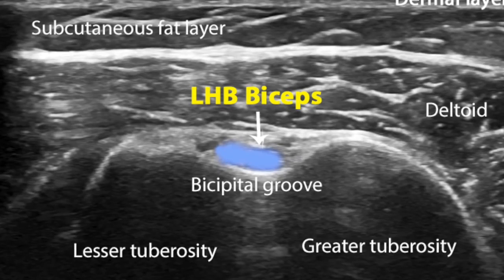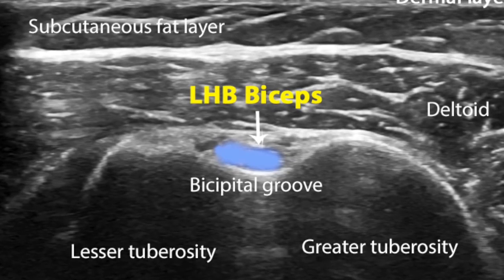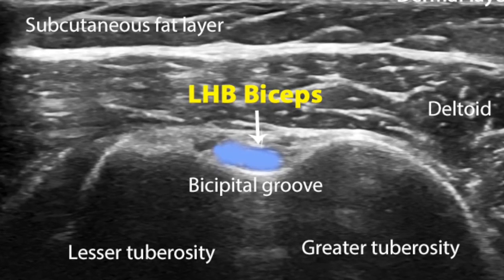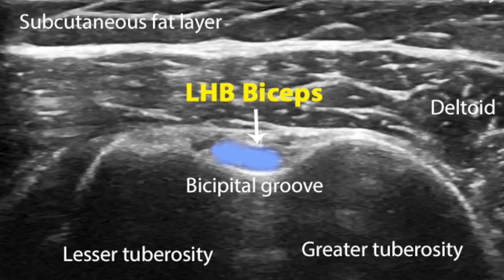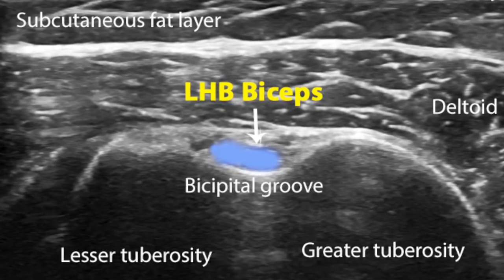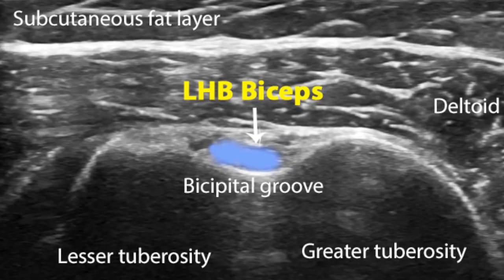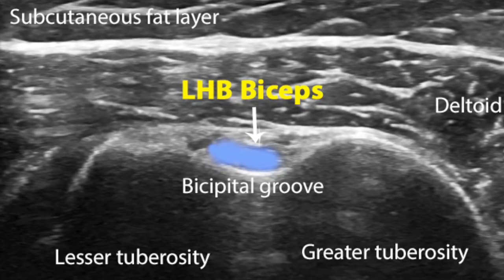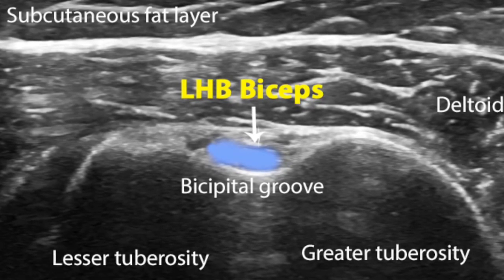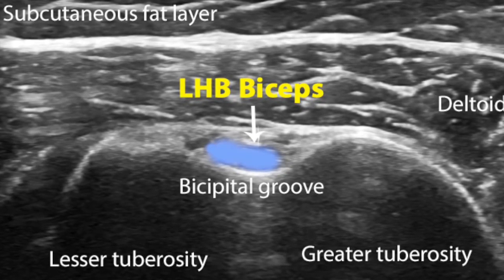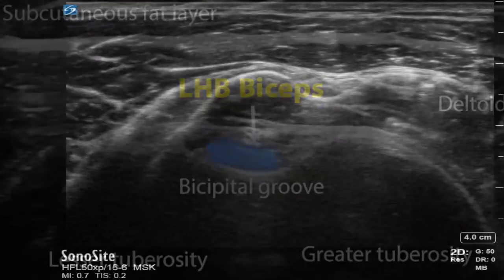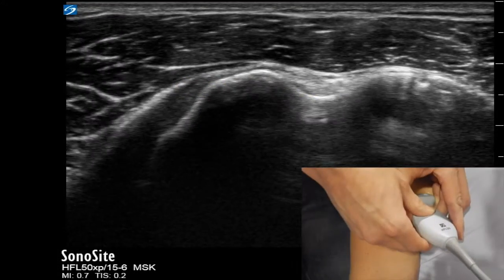Firstly, become familiar with bony landmarks around this region. It's an area that you'll frequently come to when scanning the shoulder, so be familiar with the lesser tuberosity, the greater tuberosity, and the characteristic bicipital groove in the anterior shoulder which contains the biceps tendon.